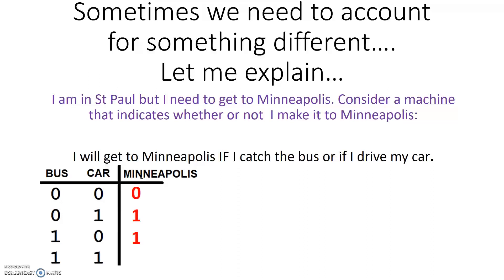But, if I have a one in a bus and a one in a car, that means I took the bus, I drove my car, which is not possible. There is no way those two input conditions are possible. So, in this case, I should not be in Minneapolis. So, here, if you look at it, the first three rows of that truth table looked very similar to an OR gate.